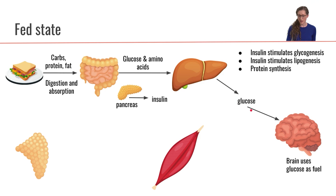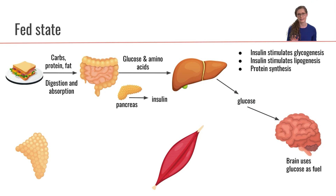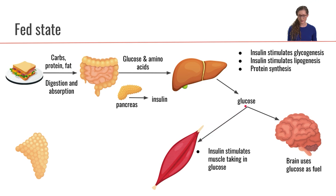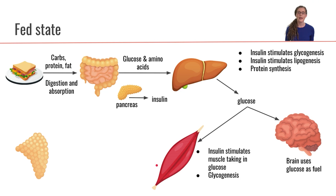What happens to that glucose? A whole bunch of it is going to be used by the brain, because the brain's preference is glucose as its fuel source. Insulin is also going to stimulate the muscle cells to take in glucose from the bloodstream, and the muscle can take that glucose and turn it into glycogen for storage — so glycogenesis.